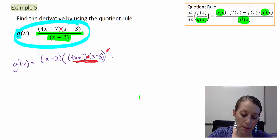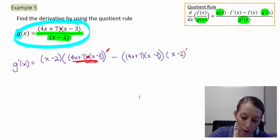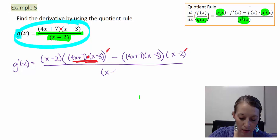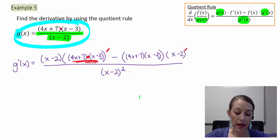Continuing on with my quotient rule, minus the original of the top, which would be 4x plus 7 times x minus 3, times the derivative of the bottom. So x minus 2, and I'm going to put a prime on it to represent that we need to take the derivative of it. And that is all over my original of the bottom, x minus 2 squared.